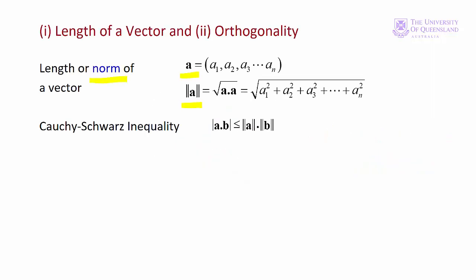A useful relationship that sometimes crops up with vectors is the Cauchy-Schwarz inequality. This states that the absolute value of the dot product is less than or equal to the product of the lengths of A and B.